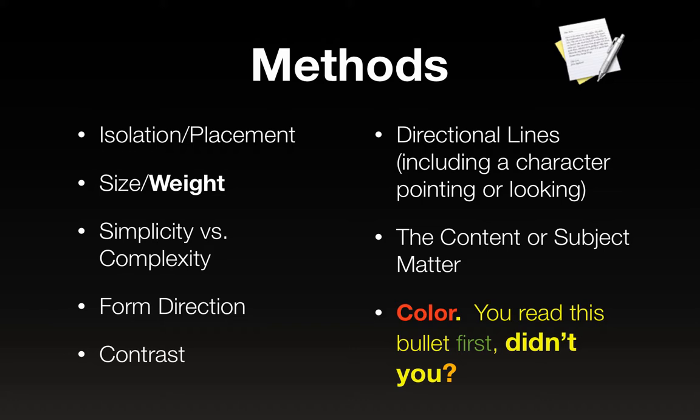If everything is heavy weight in the composition, then nothing at all is emphasized. It has to be in contrast to things that are lightweight. Simplicity versus complexity — same idea. If everything in the composition is complex, then nothing is emphasized. If everything is simple forms and there is one complex, then the complex form is emphasized. Form direction, contrast, directional lines, including a character pointing or looking — that one really works like magic. The content or subject matter itself can be emphasized, and you can emphasize through color.